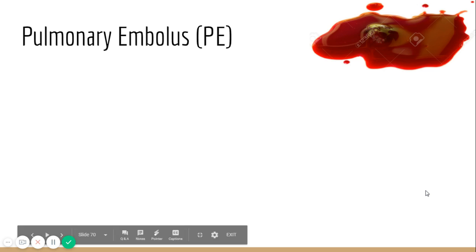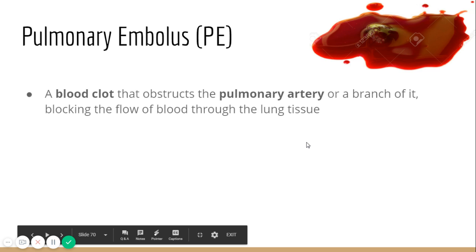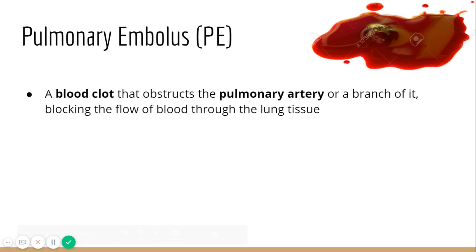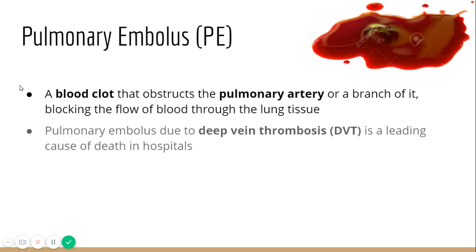Our next disorder is pulmonary embolism, commonly referred to as PE. This is a blood clot occurring within the pulmonary arteries — the vessels leaving the heart going to the lungs. The clot wedges itself in and blocks the flow of blood, meaning we're not getting blood to the lungs for gas exchange, and nothing is returning to the heart to be pumped out into general circulation.